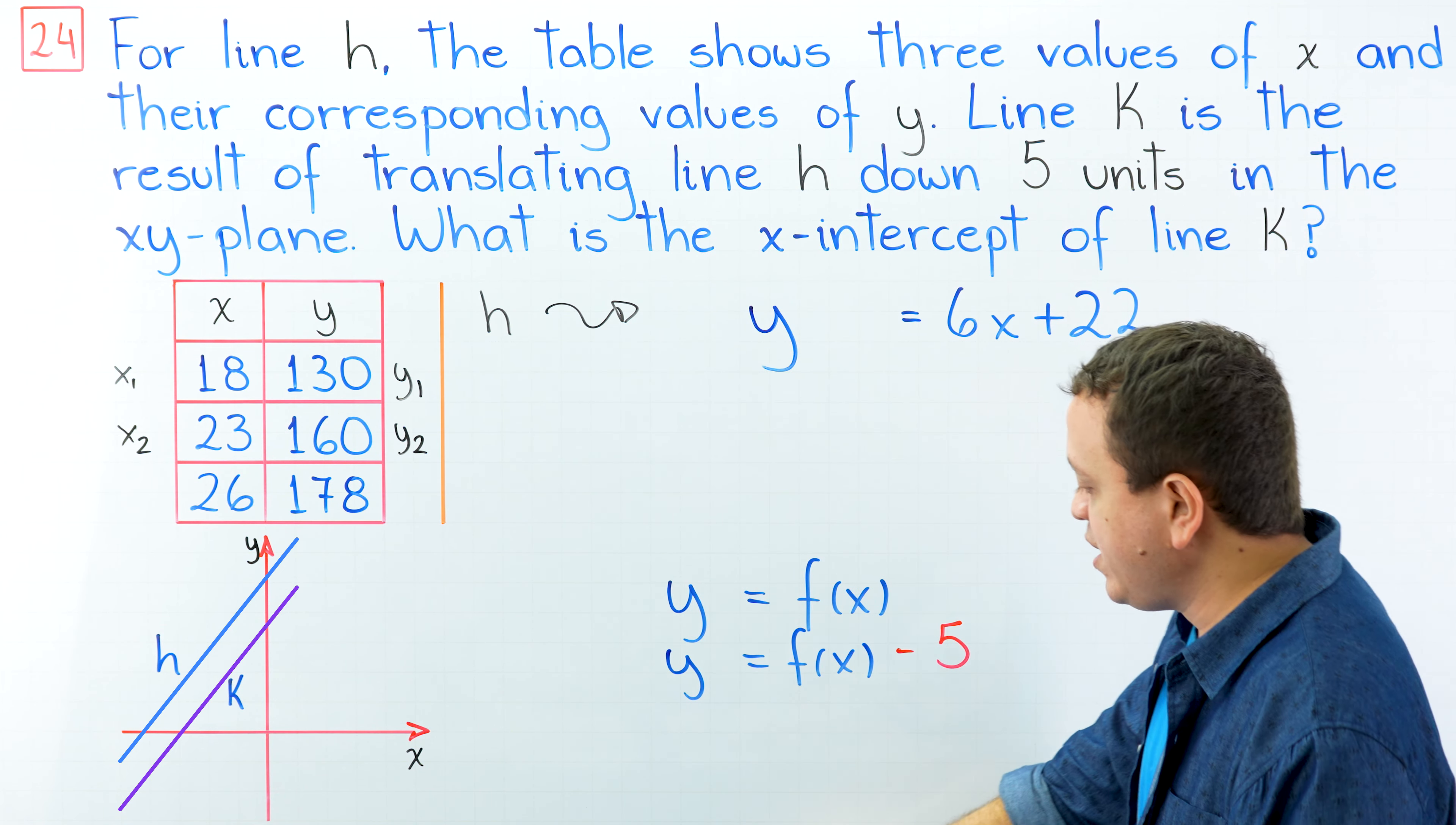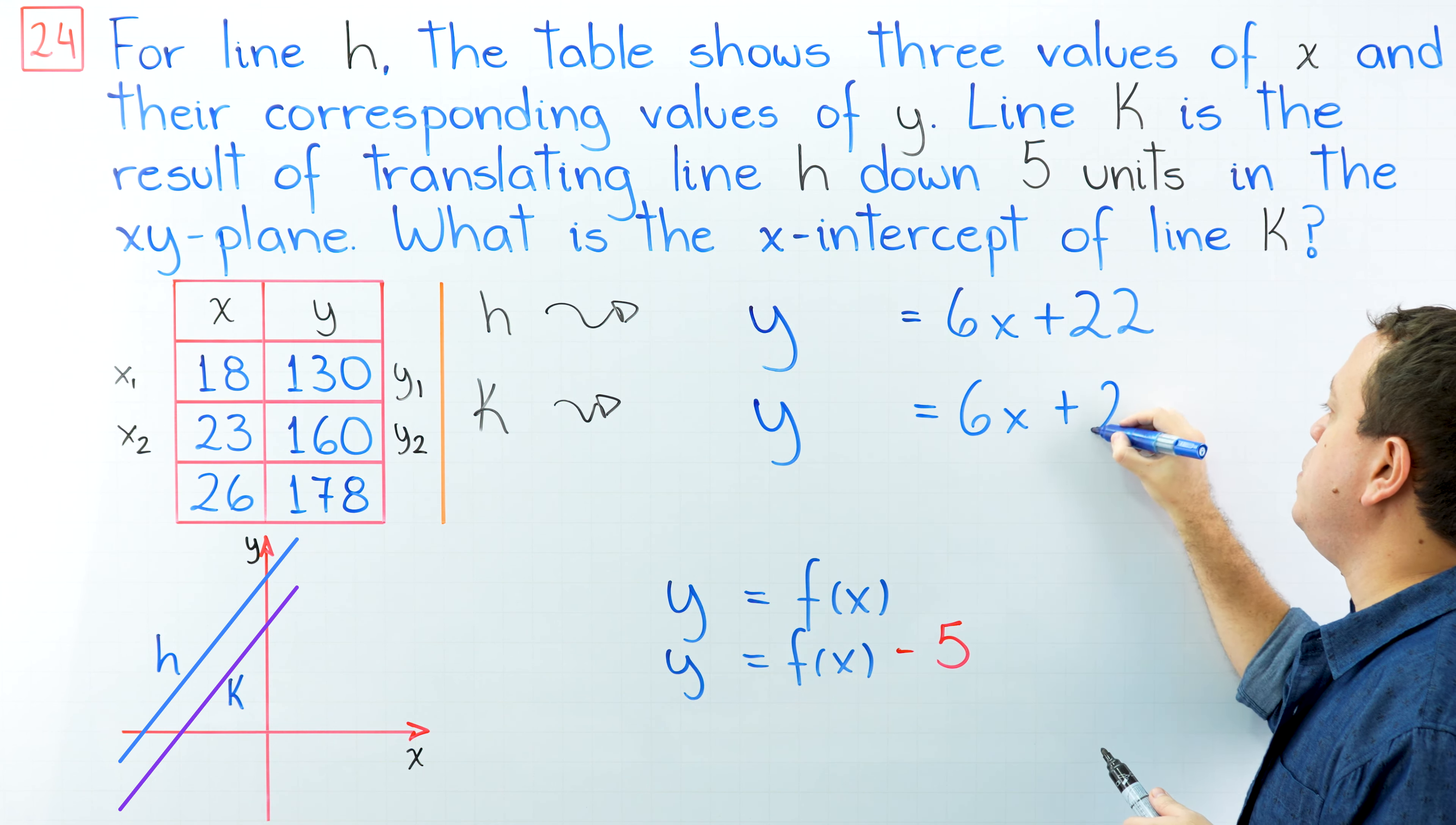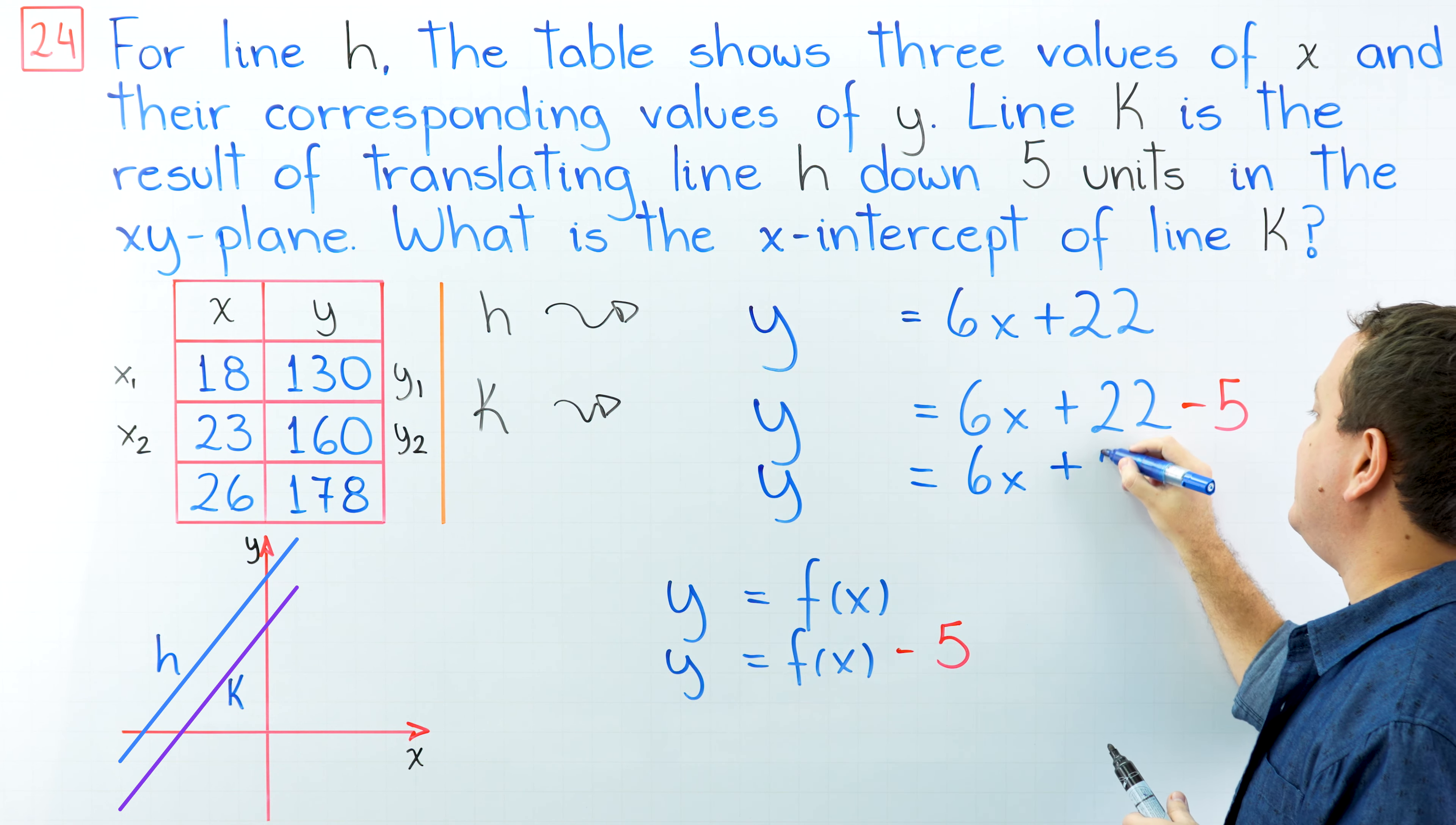Over here, we're going to do the same. We have the equation of line h. If we want to determine the equation of line k, we're going to copy the same equation, y equals 6x plus 22, and then we're going to subtract 5 from this side. In the following step, y is equal to 6x plus 17.